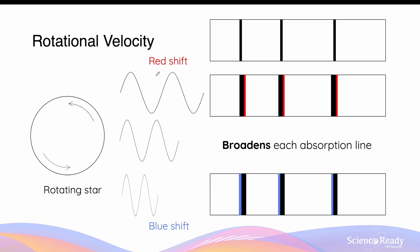A star's absorption spectrum also provides information on rotational velocity. A star's rotation gives rise to relative velocity between the source of radiation and the observer, so absorption lines are again affected by the Doppler effect. The side rotating towards Earth causes blueshift, while the side rotating away causes redshift. Therefore, each absorption line experiences both blueshift and redshift simultaneously, causing each line to become broader. The faster the rotational velocity, the broader each absorption line becomes.